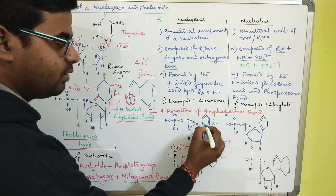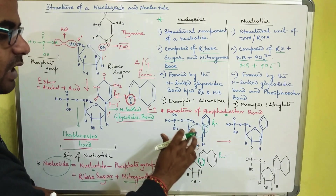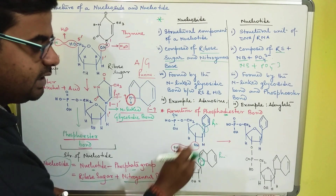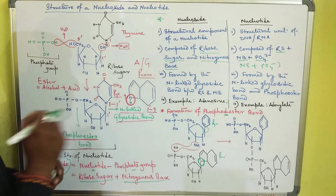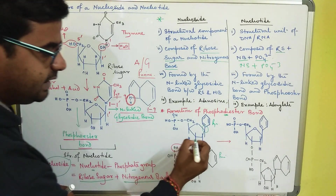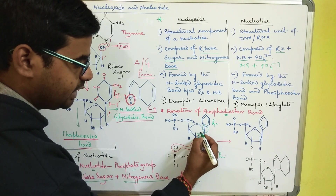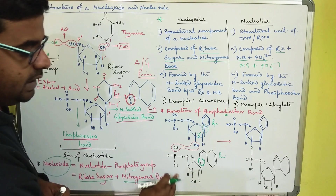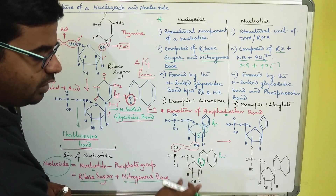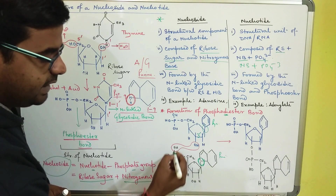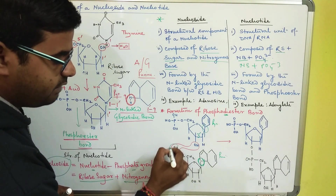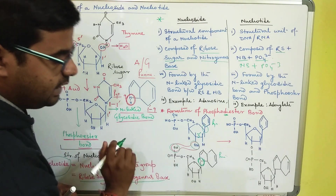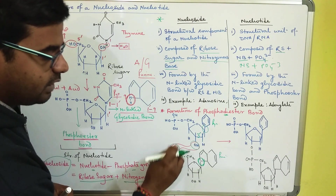So how do these two nucleotides join each other to form a polynucleotide chain? At the three prime position, the ribose sugar has one hydroxyl group. In the phosphate group of the next nucleotide, there is also an OH group. These two OH groups react with each other to form a bond.